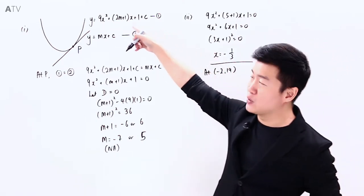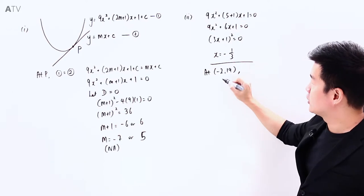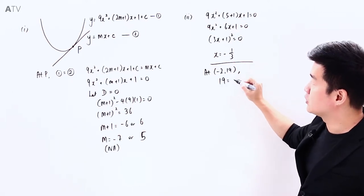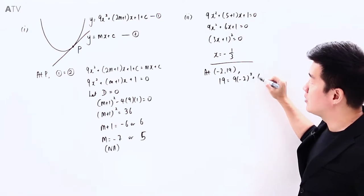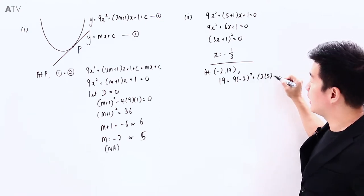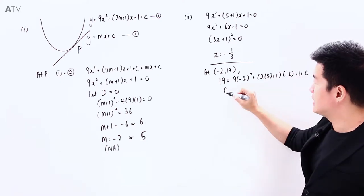we will substitute it back into here to solve for the value of C. So 19 equals 9 times x, which is (-2)² plus 2 times (m plus 1) times x, which is (-2), plus 1 plus C.